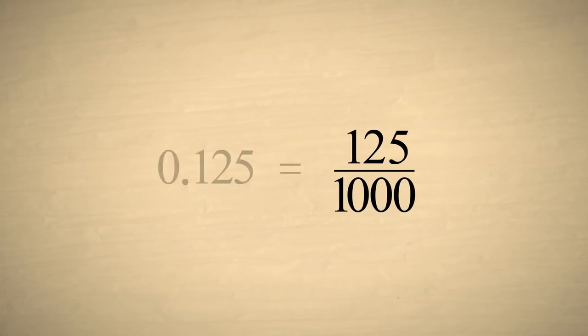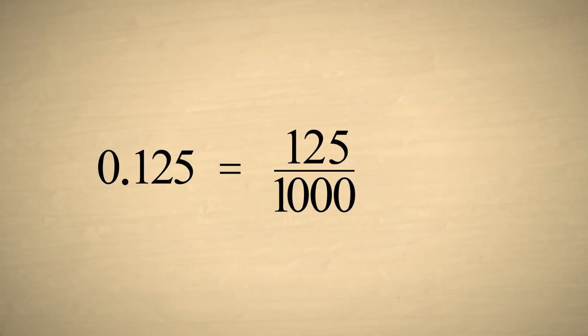So 0.125 is equivalent to the fraction one-hundred-twenty-five one-thousandths. Now, using the techniques we learned in our lecture on reducing fractions, we can simplify this fraction to one-eighth.